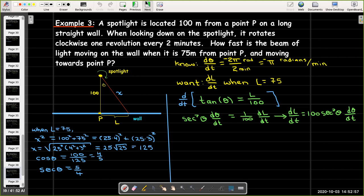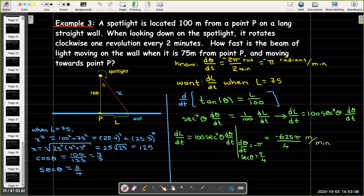So, now I can substitute and evaluate that with dθ/dt equals negative π and secant of theta equals 5 fourths. And, my result is negative 625π over 4 meters per minute.